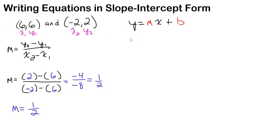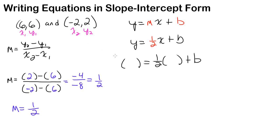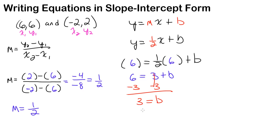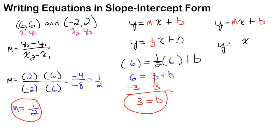Now that I know the slope is one half, I can plug it into the equation: y equals one half x plus b. I need to pick one of the two points to plug in for x and y — I'll use 6 comma 6 since both values are the same. Using parentheses, 6 equals one half of 6, which is 3, plus b. Subtracting 3 from both sides, b equals 3. So my slope is one half and my y-intercept is positive 3, giving the equation y equals one half x plus 3.